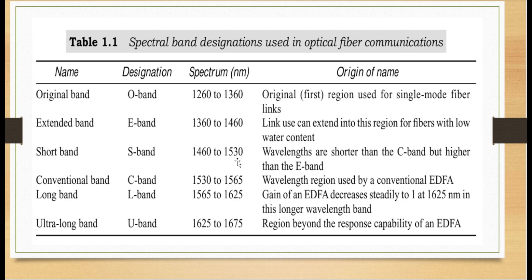For this band, wavelengths are shorter than C-band but higher than E-band. Then conventional band or long band, C-L. C is 1530 to 1565 and L is 1565 to 1625. This is the wavelength region used by conventional EDF-A gain or EDF-A decreases steadily to 1 at 1625 nm in this long wavelength band. Then ultra long band, U-band, it is 1625 to 1675. This region beyond the response capability of EDF-A amplifier.